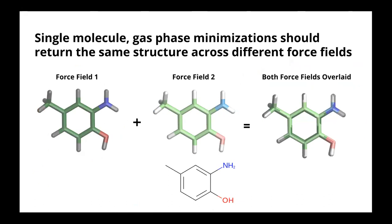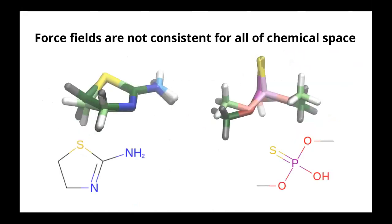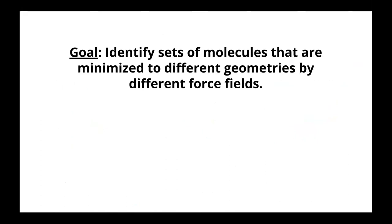This is a project mostly done by an undergrad in the lab named Jordan Ehrman, co-advised by Caitlin Bannon. Basically, if you imagine all force fields in the limit of perfection, they will minimize in gas phase to the same structure. In one case we have this dark green force field, and in force field two we have this light green — if you overlay them, they should be indistinguishable. But in reality, force fields are not consistent for all of chemical space. You might have differences in specific torsions and rings, and these are the chemistries we want to find. The goal is to identify sets of molecules that are minimized to different geometries by different force fields.